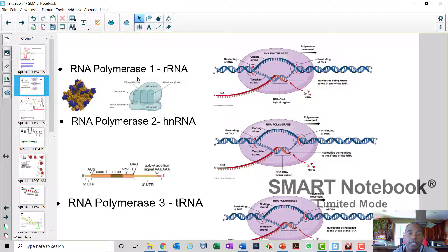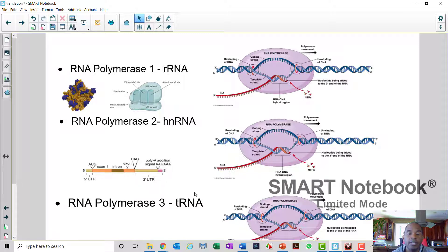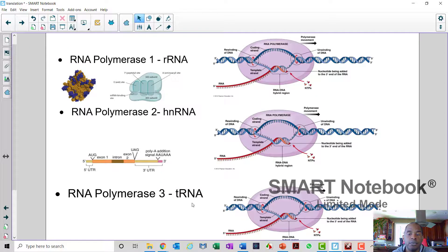Now, these RNAs, whether it's mRNA or rRNA or tRNA, they're all transcribed from the DNA. So RNA polymerase 1 is responsible for creating rRNA. RNA polymerase 2 is responsible for producing hnRNA, which we saw here. And RNA polymerase 3 is responsible for producing tRNA.